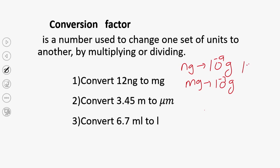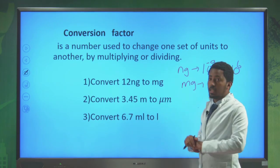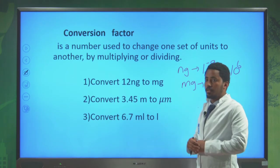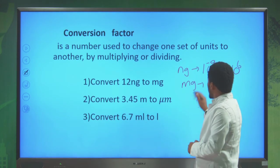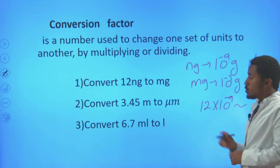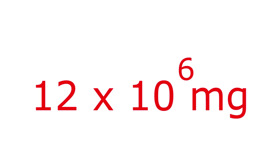The difference between nanogram and milligram is 10 to the power of 6, which is almost 1 million. So to convert 12 nanograms to milligrams: 12 × 10⁻⁹ multiplied by 1 over 10⁻³ gives us 12 × 10⁻⁶ milligrams. This means 12 nanograms equals 12 × 10⁻⁶ milligrams.